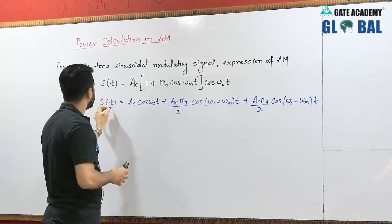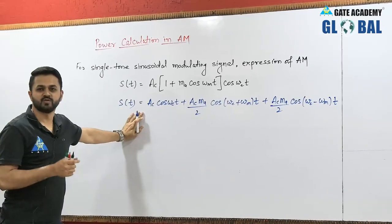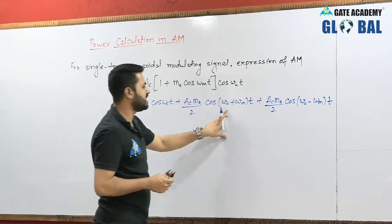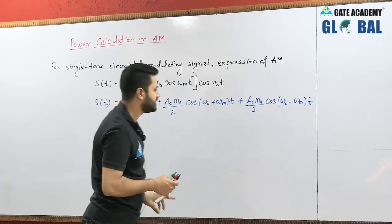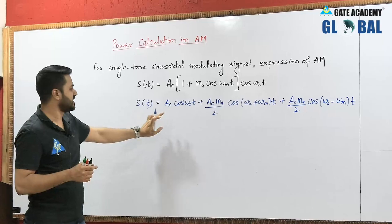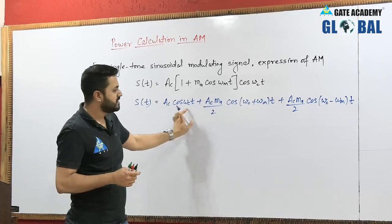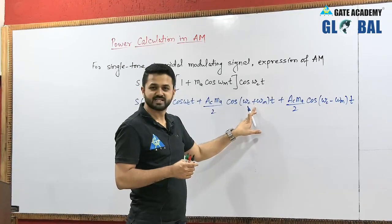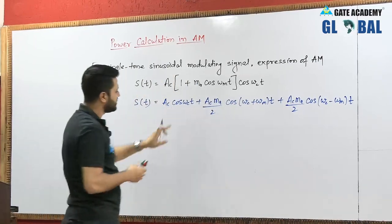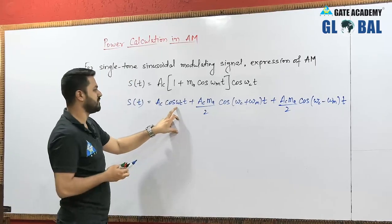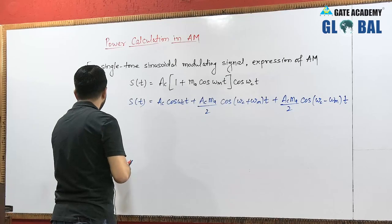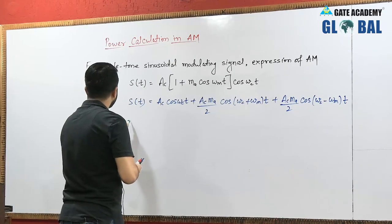We used this same expression to derive the bandwidth of AM. This first term is the carrier component, the second is the upper sideband term, and the third is the lower sideband term. The power requirement is the sum of the power for the carrier term, the upper sideband, and the lower sideband. This is called carrier power because it contains only the carrier frequency.